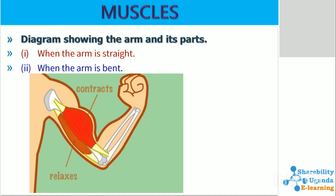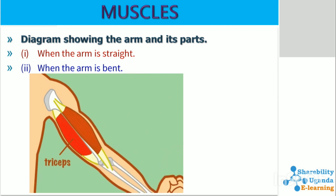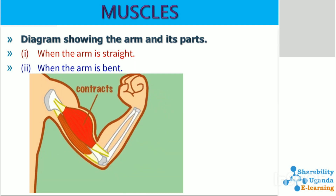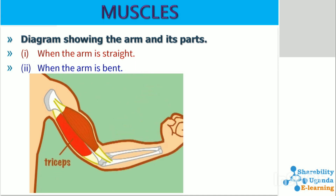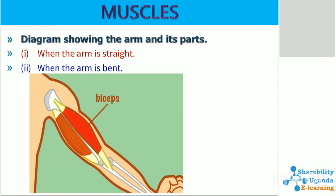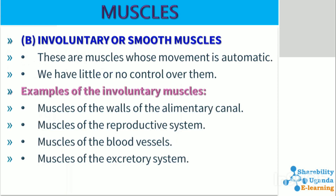When the arm is bent, the biceps contract. As we said, muscles only contract and relax. Then we can look at involuntary or smooth muscles, which are muscles whose movement is automatic — we have little or no control over them.